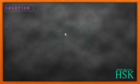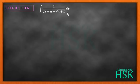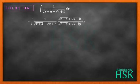To solve this question, I see that the denominator is an irrational term. By experience, I'm going to multiply and divide this fraction by its rationalizing factor — that is, square root of (x plus a) plus square root of (x plus b).